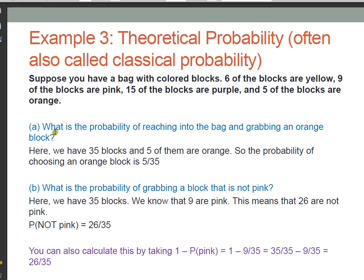The first question is, what is the probability of reaching into the bag and grabbing an orange block? All right. Well, the first thing we need to know is how many blocks are in this bag altogether. If we've got six that are yellow, nine that are pink, 15 that are purple, and five that are orange, that's 35 blocks altogether. We also know that just five of them happen to be orange. So the probability of choosing an orange block is five out of the 35 blocks that we have. So that's the answer there.